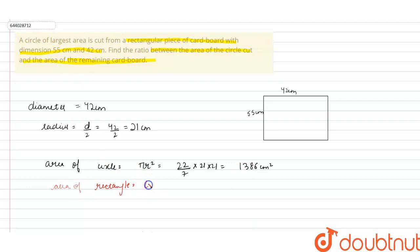Now let's find out the area of rectangle, which is equal to length into breadth, that is equal to 55 into 42, which is equal to 2310 centimeter square.